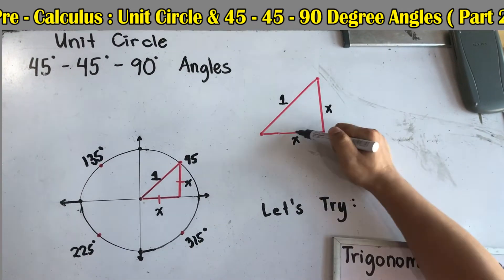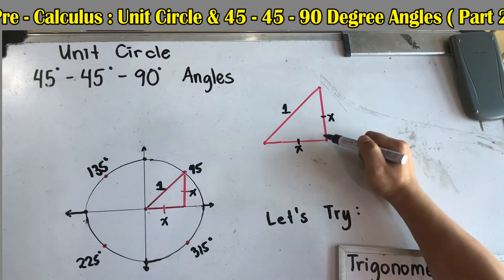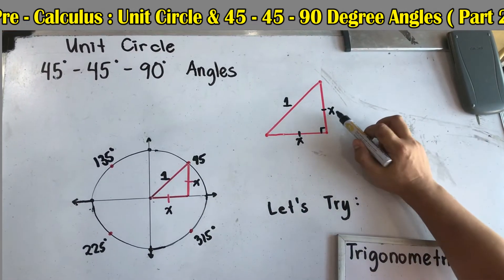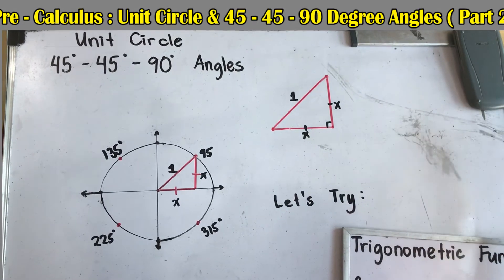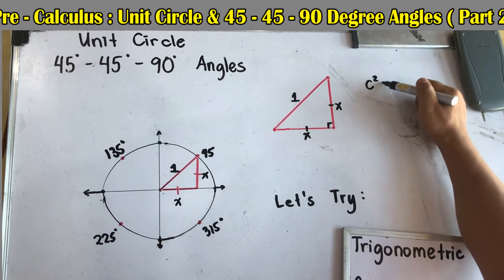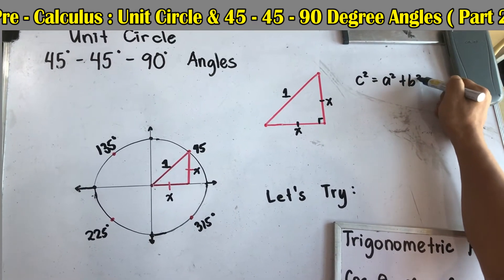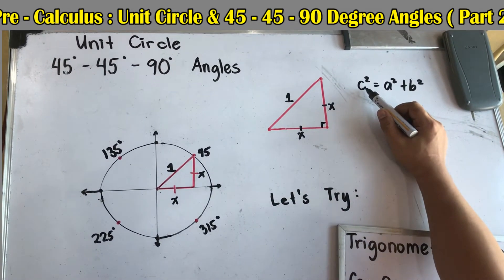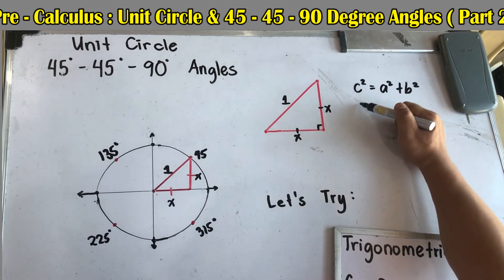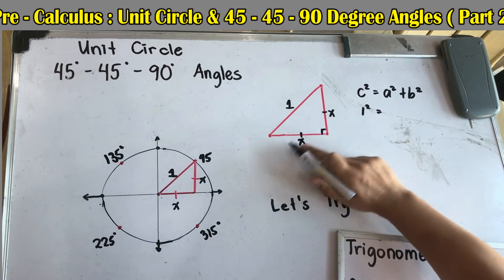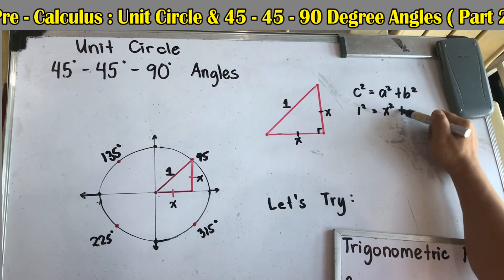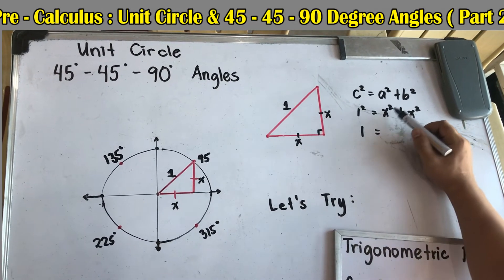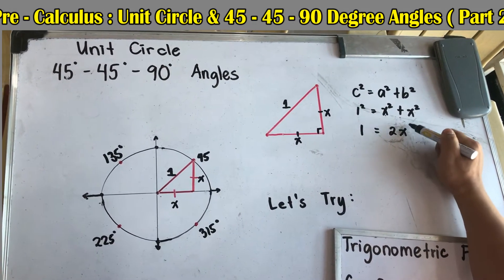Since we have a right triangle, we're going to use the Pythagorean theorem to find the value of x. The Pythagorean theorem states: c² = a² + b². Here, c is our longest side (the hypotenuse), which equals 1. So we have: 1² = x² + x², which gives us 1 = 2x².